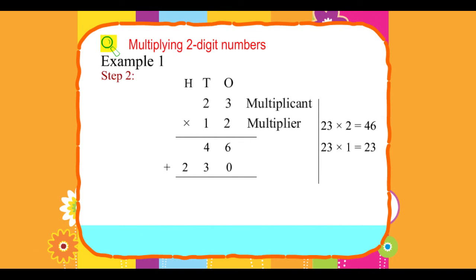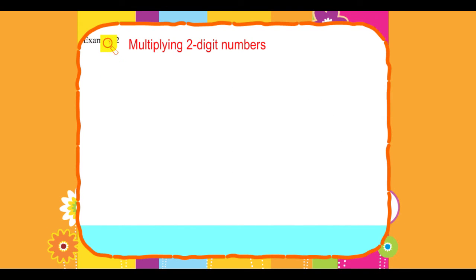Product: 276. Example 2: Multiply 31 by 24. Step 1: Multiply 4 into 31 equals 124.